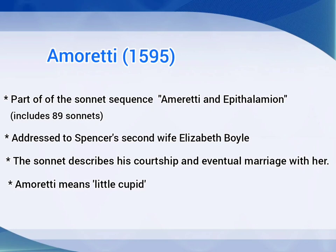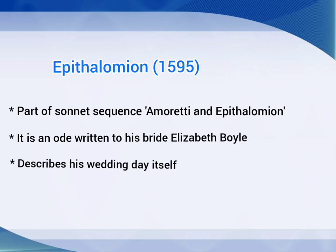The next major work of Spenser is Amoretti. It is published in 1595. It is a part of the sonnet sequence Amoretti and Epithalamion, which includes 89 sonnets. It is addressed to Spenser's second wife, Elizabeth Boyle. The sonnet describes his courtship and eventual marriage with her.